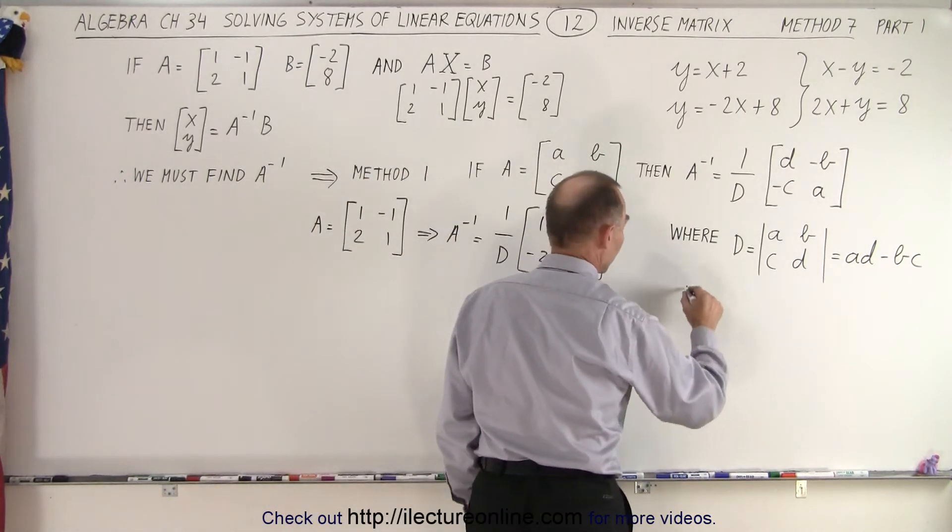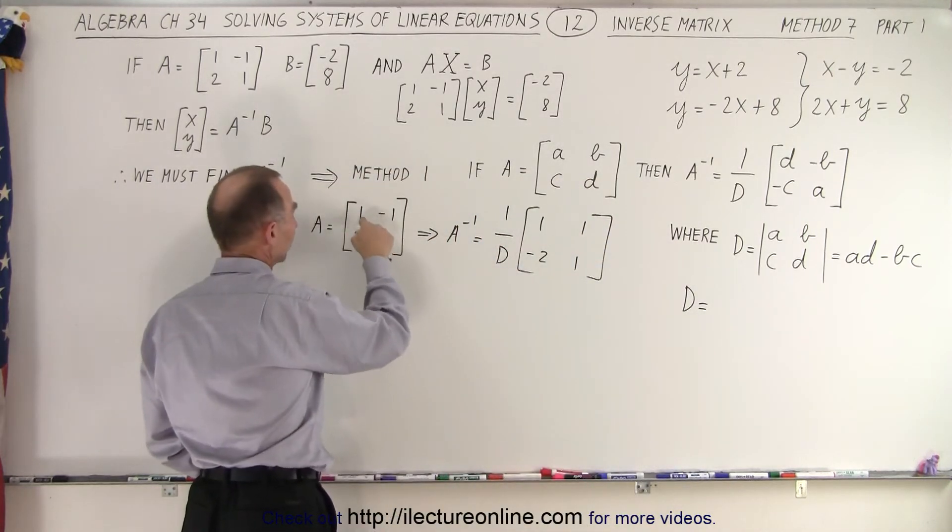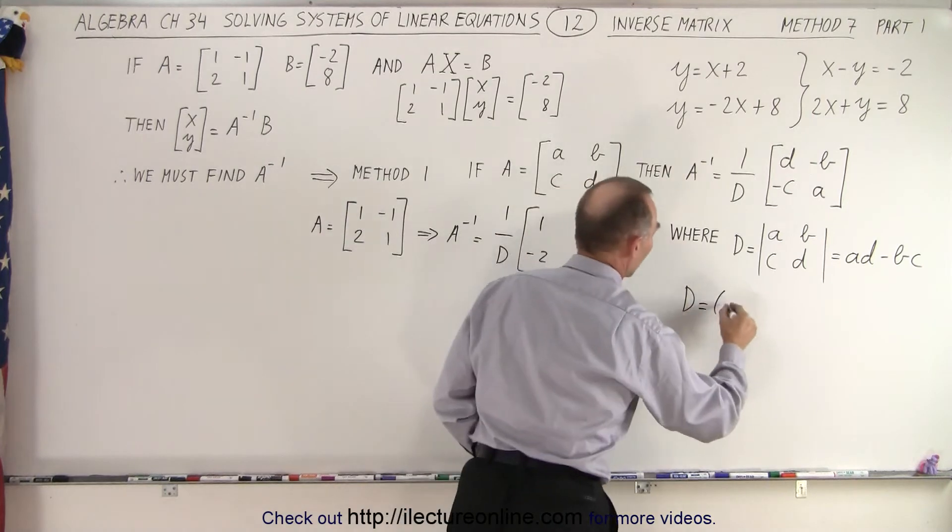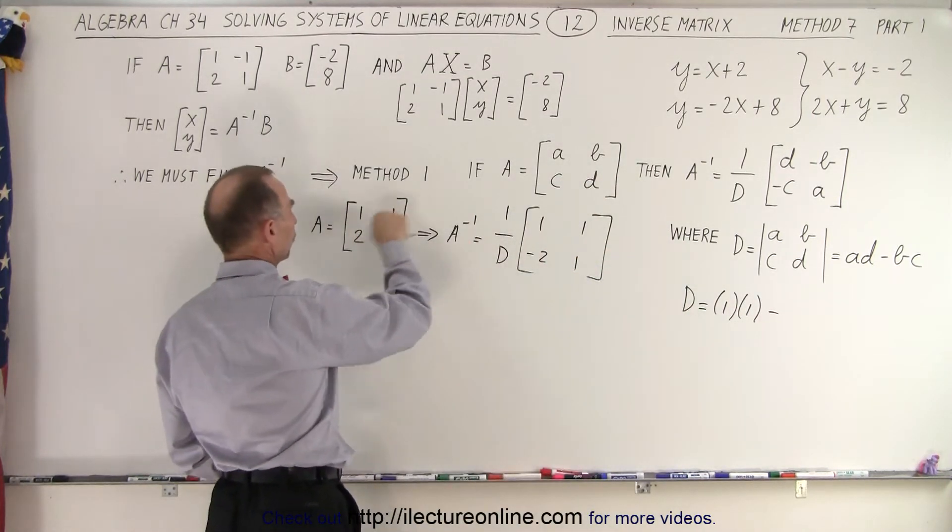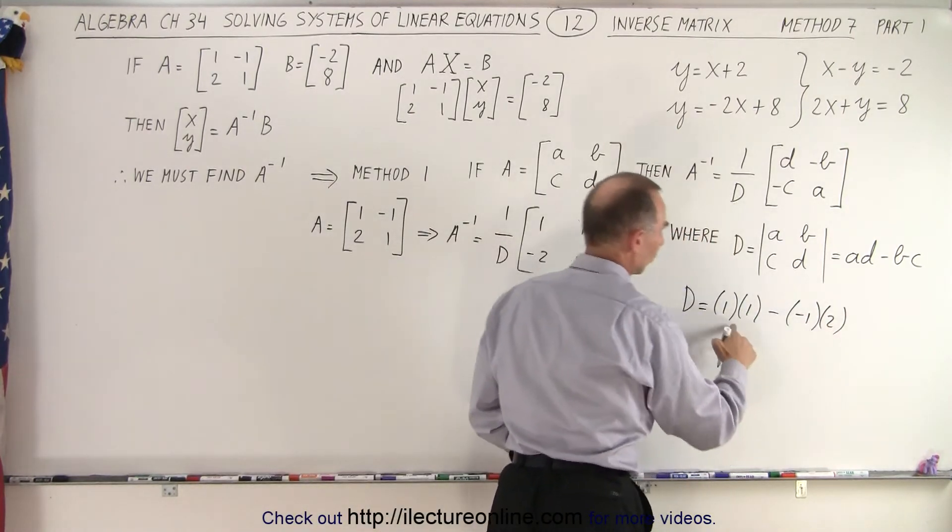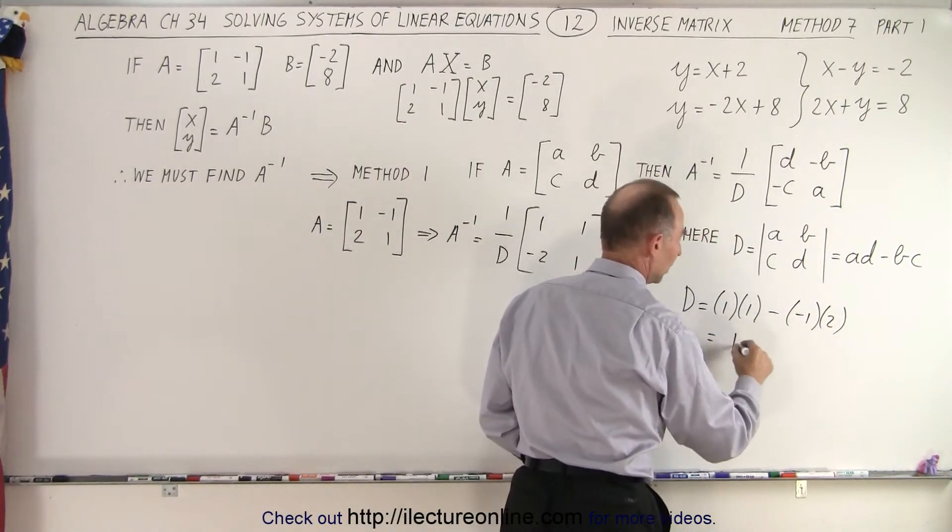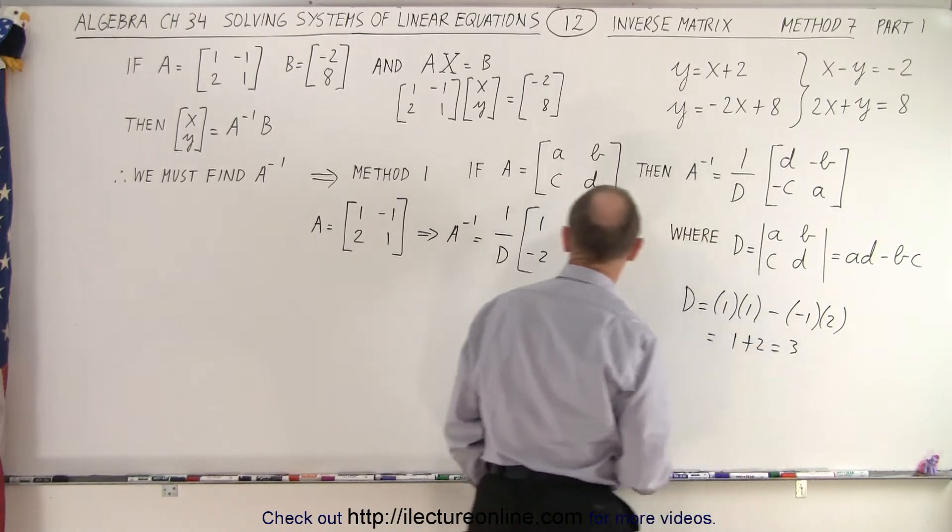So the determinant is going to be equal to, going back to the A matrix, the product of those two, so that's going to be 1 times 1, minus the product of those two, which is going to be negative 1 times 2. So here we can say that this is equal to 1, minus times a minus, which is plus 2, which is equal to 3.